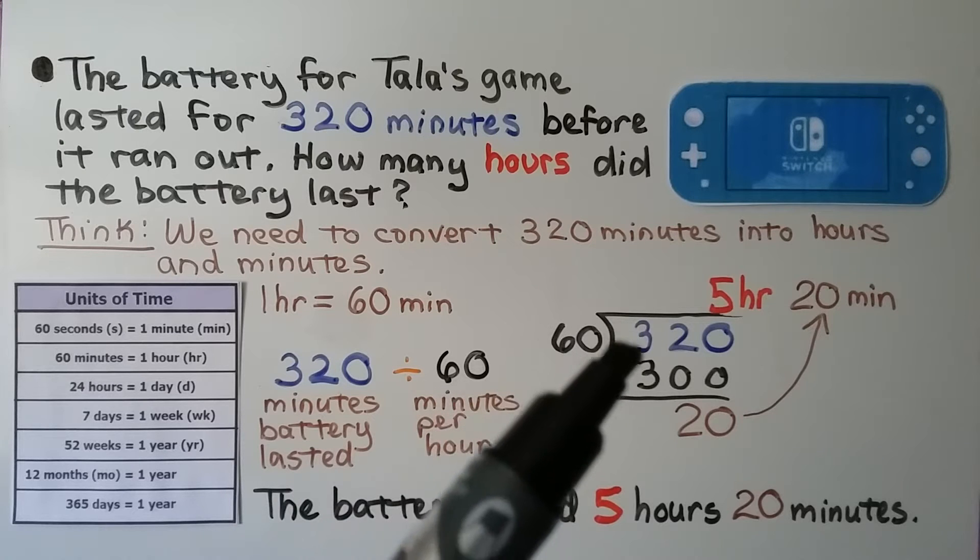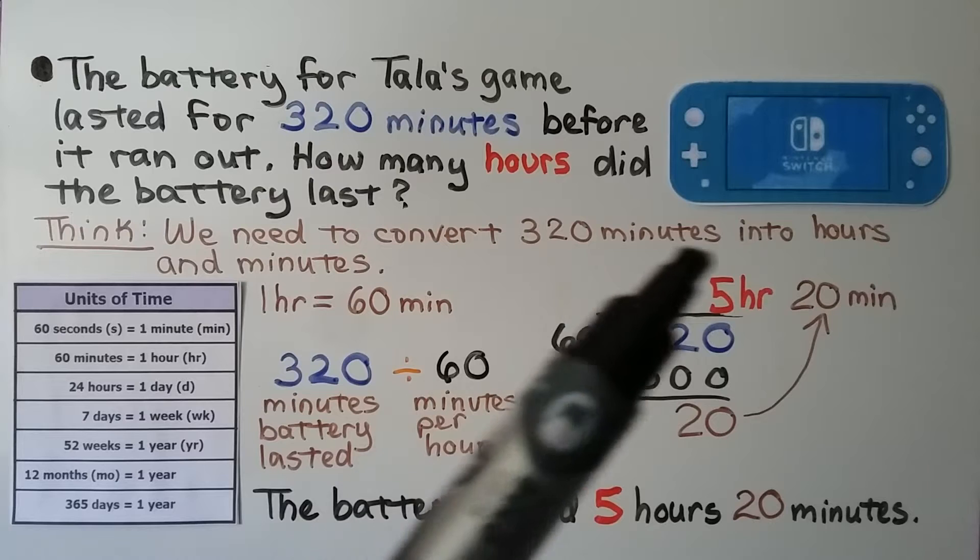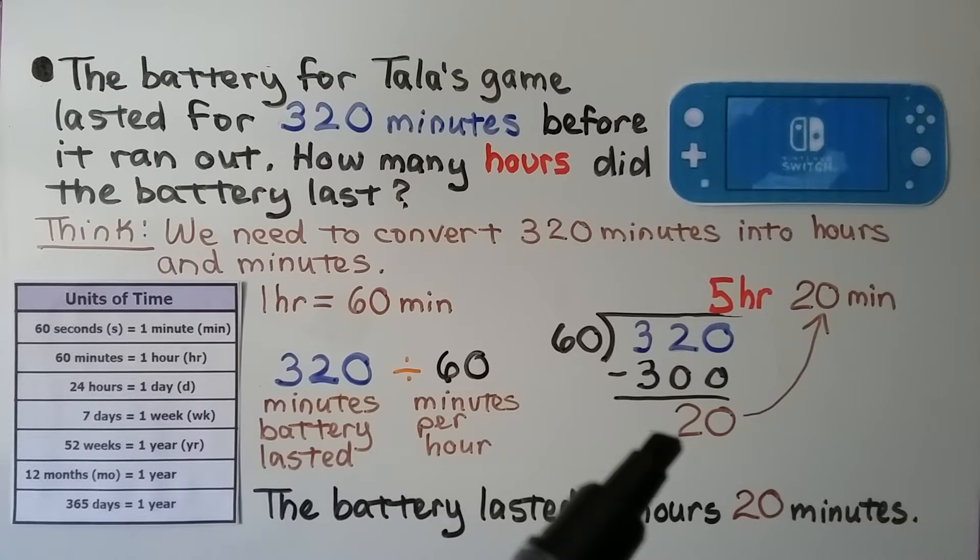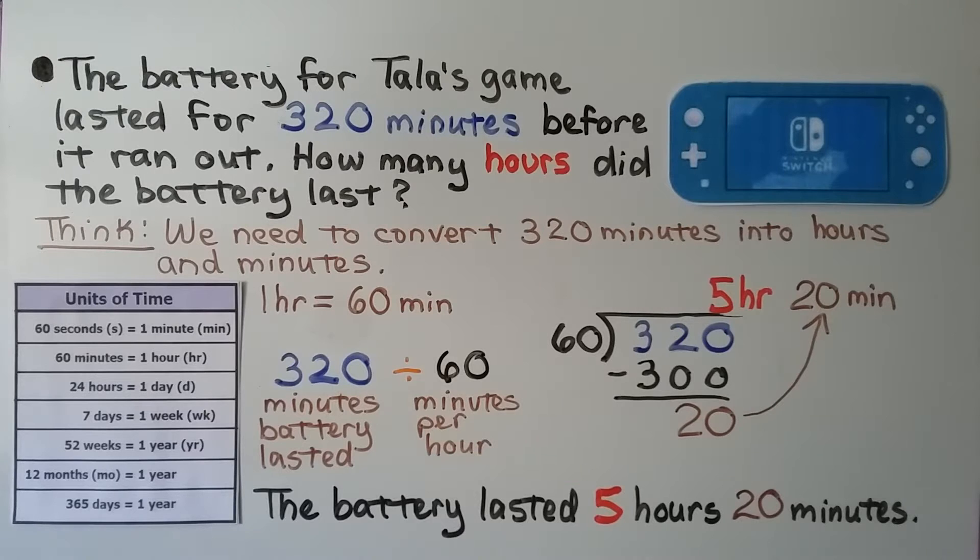60 fits into 320 five times, because 60 times 5 is 300. We subtract and get a 20. That means we can use this 20 remainder as the minutes. It's five hours and 20 minutes that the battery lasted.